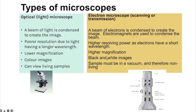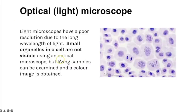Coloured images from electron microscopes can still be produced by adding colour in programs like Photoshop. Because optical microscopes have lower resolution, small organelles such as mitochondria, chloroplasts and ribosomes are not visible; you can only see larger structures like the nucleus, DNA and chromosomes.